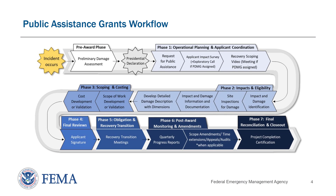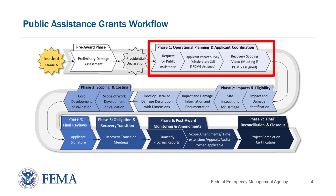Let's take a quick look at how the EEI workflow fits within the PA grant process. After a Presidential Declaration has been made, the applicant begins Phase 1 of the Public Assistance Grant Program by submitting a Request for Public Assistance, or RPA. This will be reviewed first by the recipient and then by FEMA. Once the RPA has been approved, a PDMG can be assigned to the applicant. Together, the PDMG and applicant will complete an exploratory call and applicant impact survey, followed by a recovery scoping meeting. The applicant can begin to work on the Initial Damage Inventory, or DI, during this time.